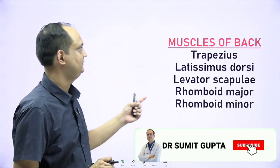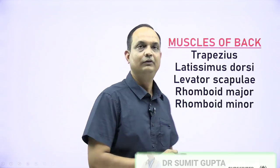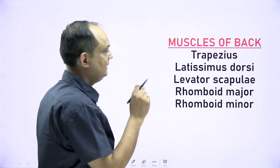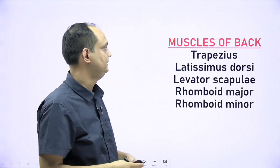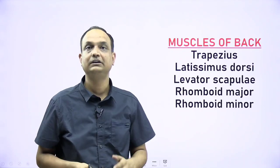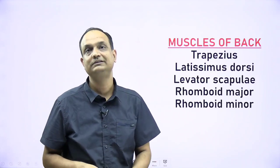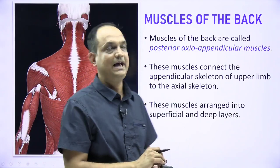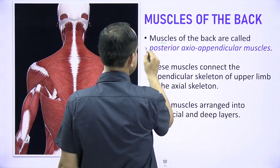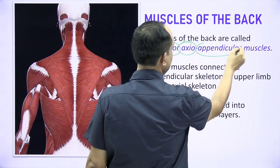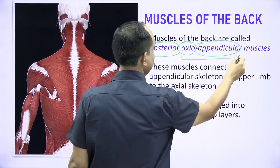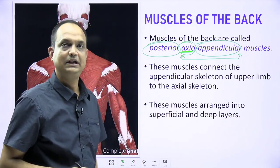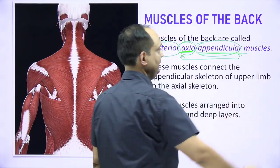Hello students, today we'll discuss the muscles of the back. There are five important muscles arranged in two layers. Trapezius and latissimus dorsi are the superficial muscles, and three small muscles are deep. The muscles of the back are known as posterior axio-appendicular muscles — connecting the axis (midline bones like the vertebral column) with the appendicular area (limbs).